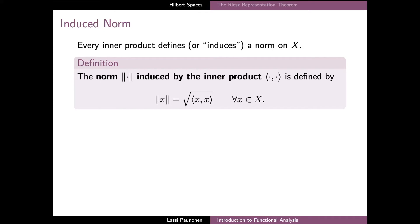Especially the first axiom of the inner product very much resembles the first axiom of a norm. And in fact, there is a strong connection with the definitions, since every inner product turns out to also define a specific norm on the vector space. More precisely, the norm induced by the inner product is defined as the square root of the inner product of the vector x with itself.